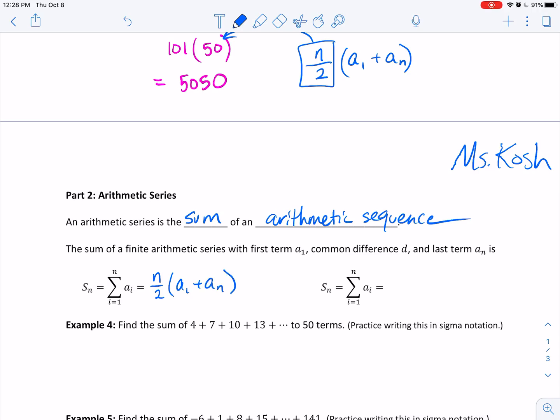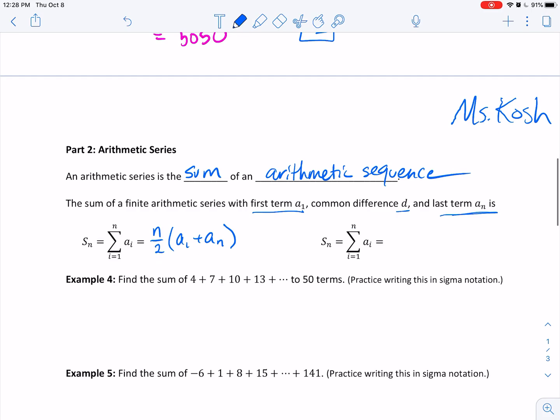When we look at this again, first term a_1, common difference d, hang tight for that a second. The last term is n, and the n right here, these n's, n is the number of terms.